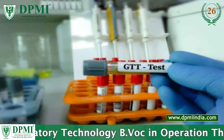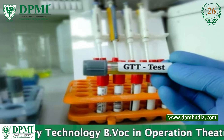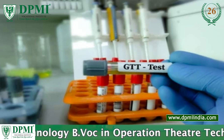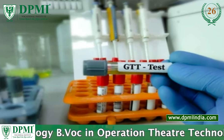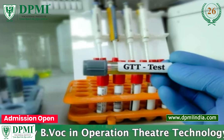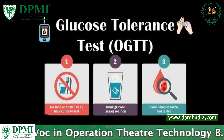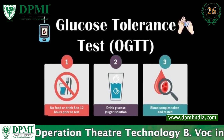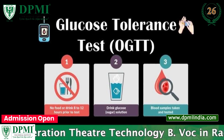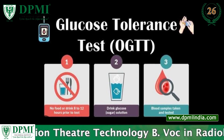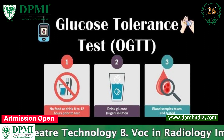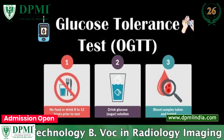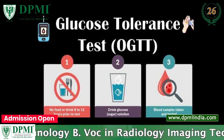Baseline Blood Sample: The patient's blood is drawn to measure their fasting blood glucose level. The patient is then given a glucose solution to drink, and blood samples are taken at regular intervals after the glucose solution is consumed.